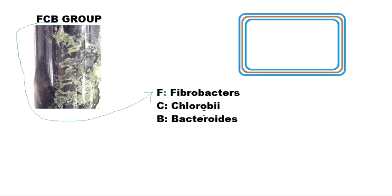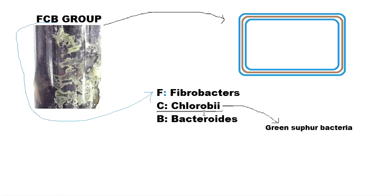Now let us discuss each phylum. First, Chlorobi. Chlorobi is a phylum containing two classes: Ignavibacteria, which is a non-photosynthesizing class of bacteria, and the other major class which is the green sulfur bacteria.